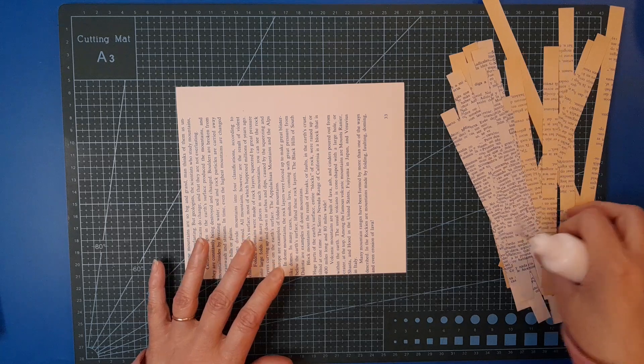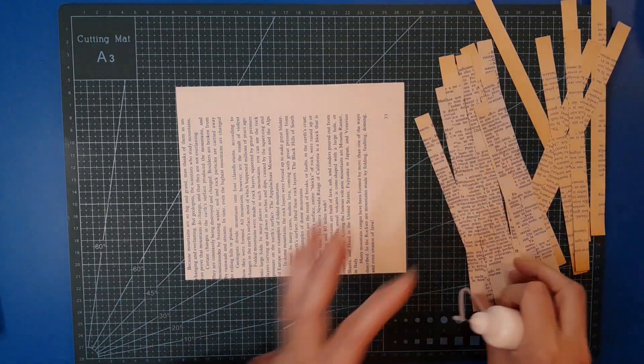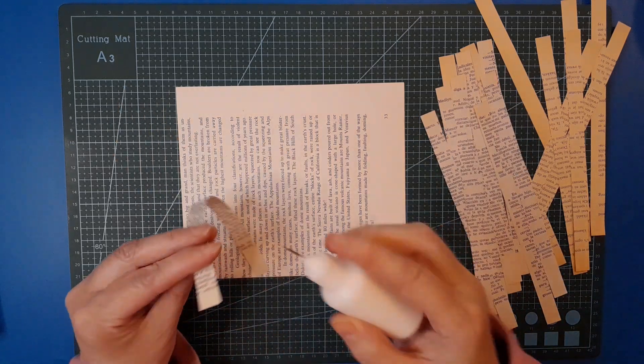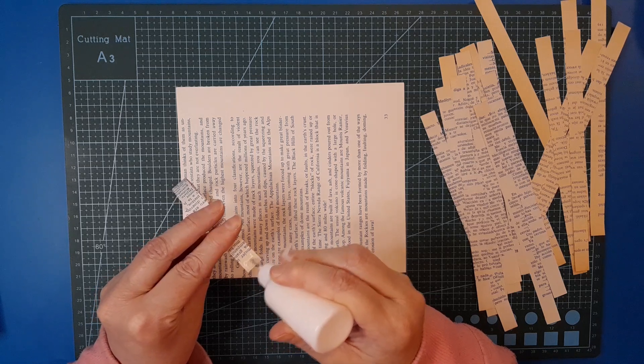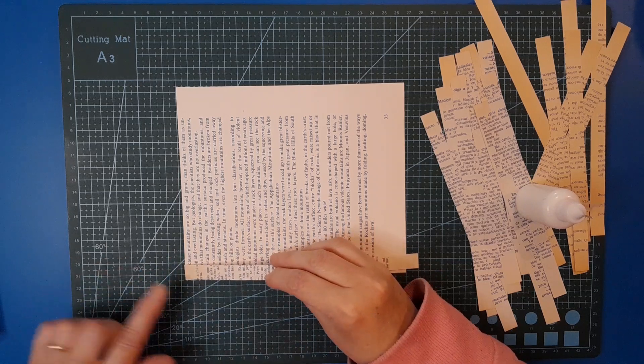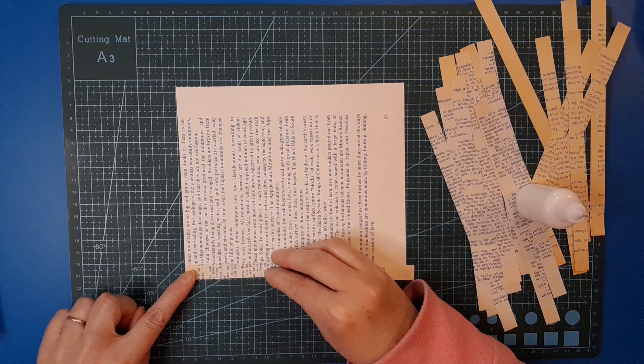I take my first strip - keep your colors, your different colors, separated into two piles as much as you can - and I'm just going to take my first strip, put a little bit of glue on the top of it, just about the width of your strip, and glue it on one edge.